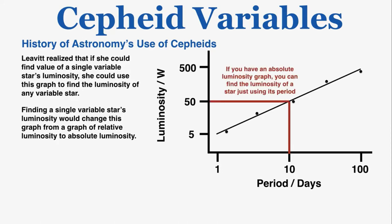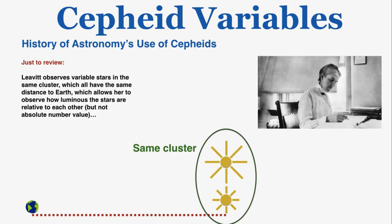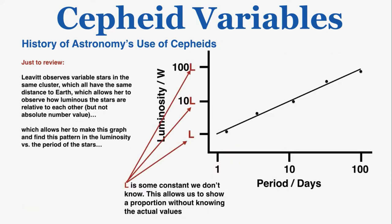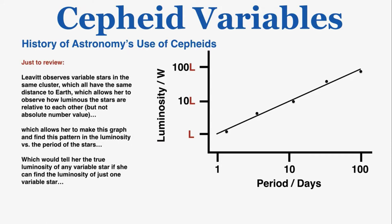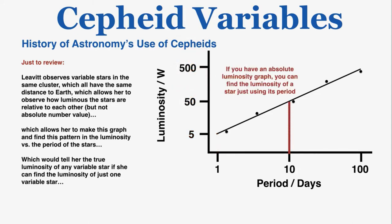With an absolute luminosity graph, you can find the luminosity of a star just using its period — without needing its distance. To summarize: Leavitt observed variable stars in the same cluster (all at the same distance from Earth), which allowed her to compare their relative luminosities, find a period-luminosity pattern, and determine that knowing just one star's true luminosity would reveal the absolute luminosity of every variable star — observable from Earth using only its period.